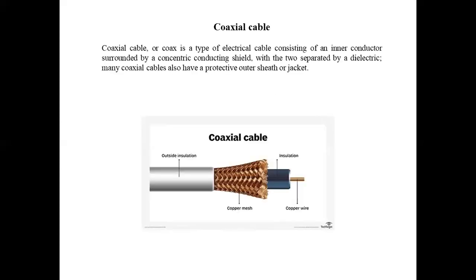Let's start with the first one: the coaxial cable. As we discussed in the transmission media, we start with the coaxial cable. The coaxial cable, or coax, is a type of electrical cable consisting of an inner conductor surrounded by a concentric conductive shield, with the two separated by a dielectric. Many coaxial cables also have a protective outer shield.